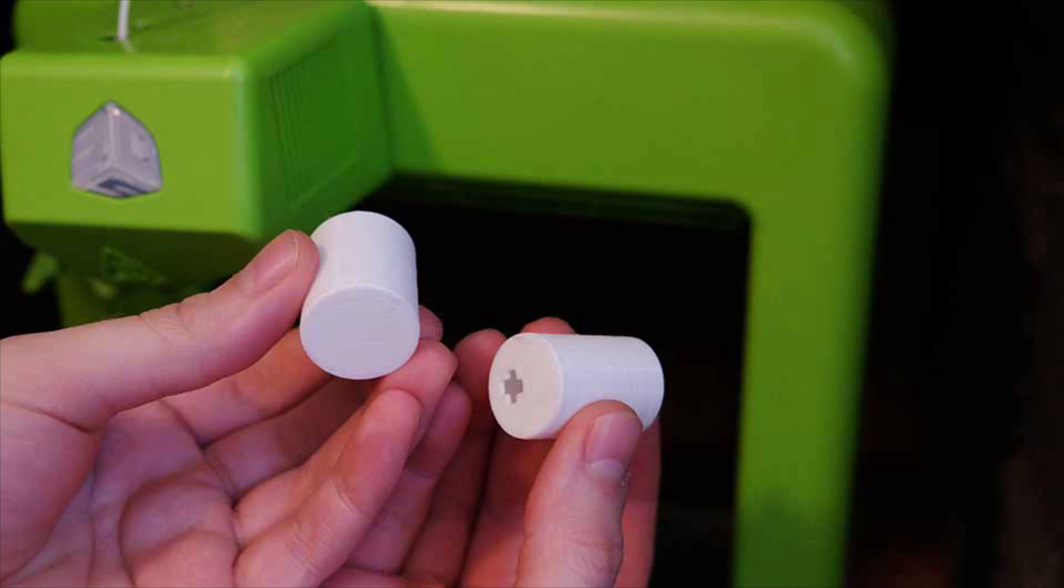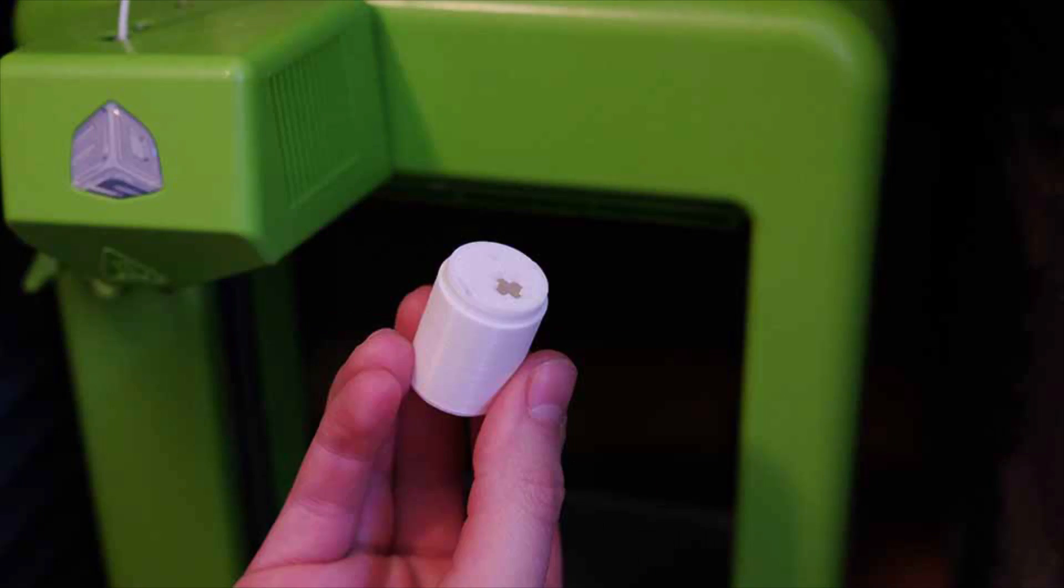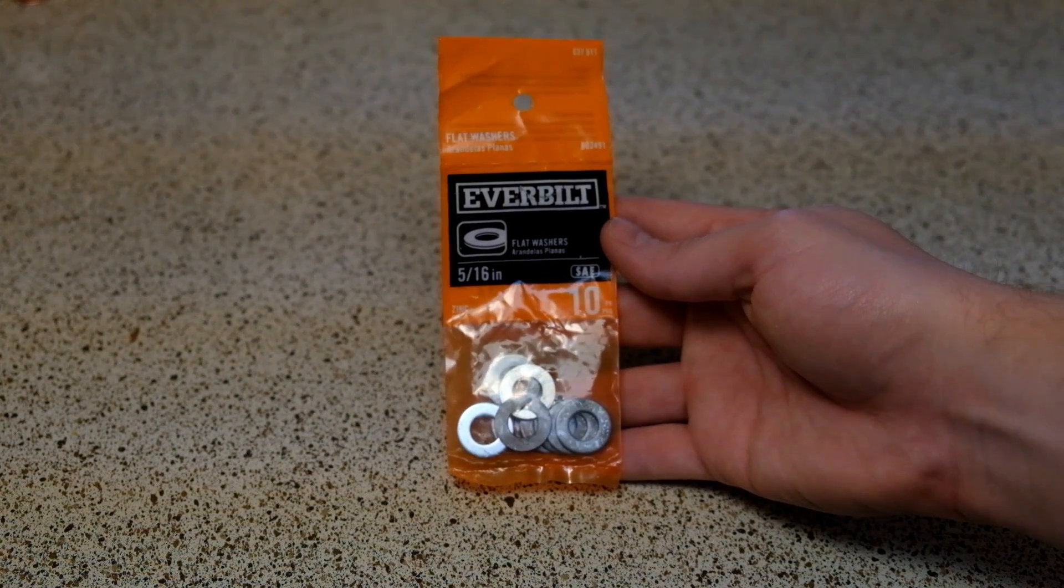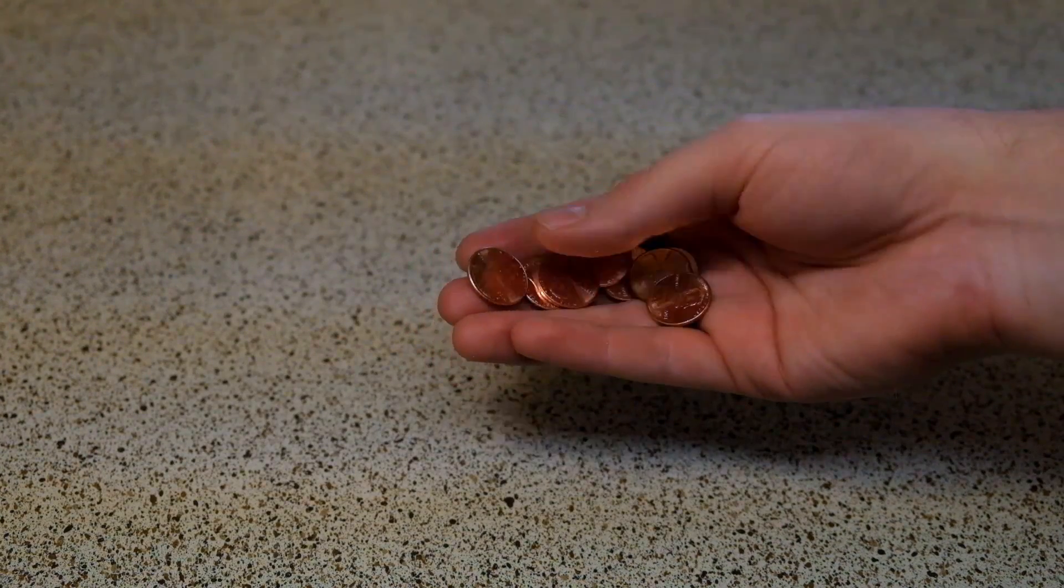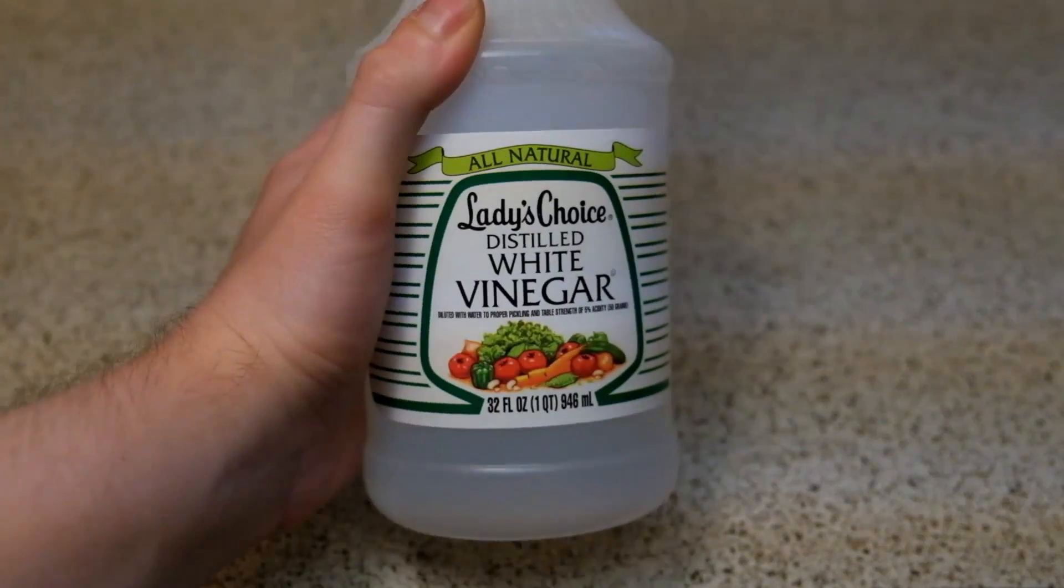To build this we're going to need a few materials. Let's start by 3D printing the battery case, 5/16th zinc washers, non-stick grill wipes, about 10 new pennies, and some vinegar.